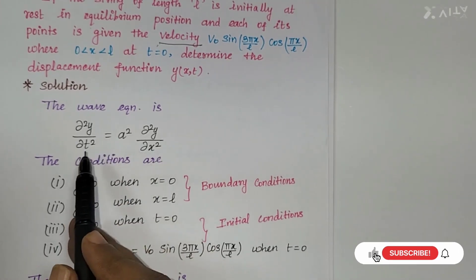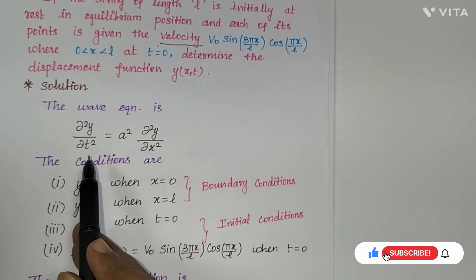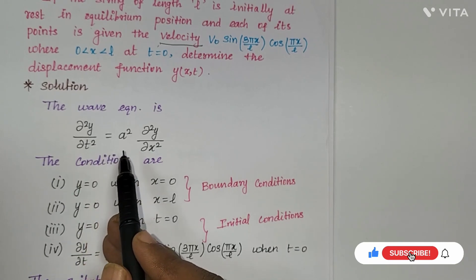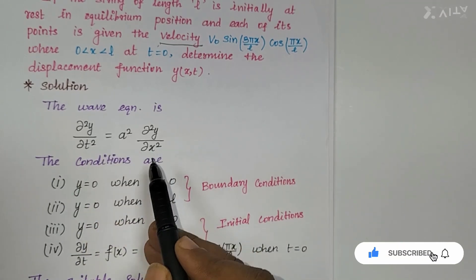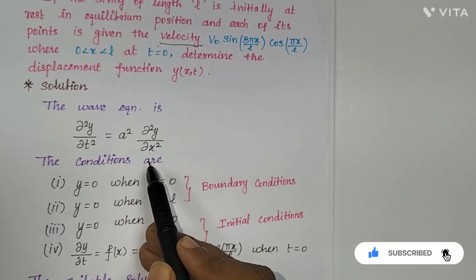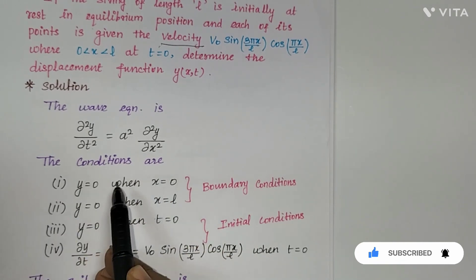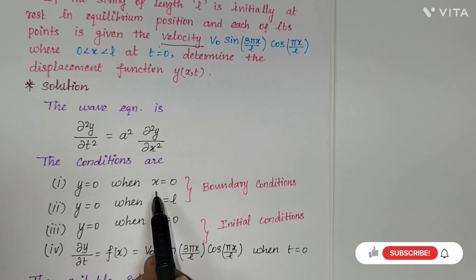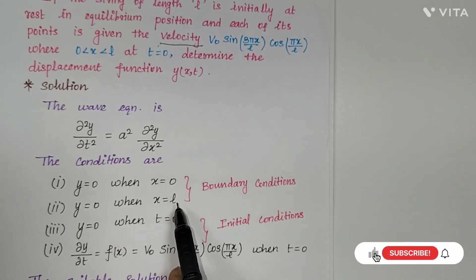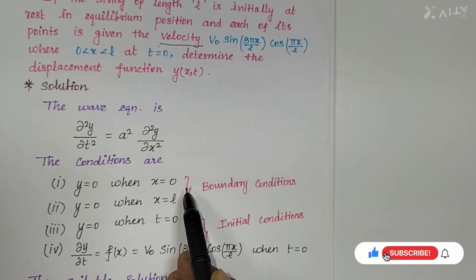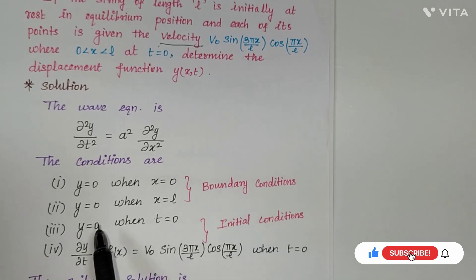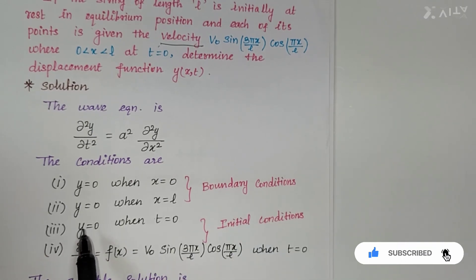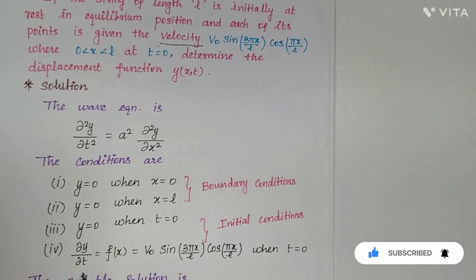We begin by writing the wave equation: ∂²y/∂t² = a²·∂²y/∂x². After that, we write the conditions. The boundary conditions are: y = 0 when x = 0, and y = 0 when x = L. These first two conditions represent boundary conditions.